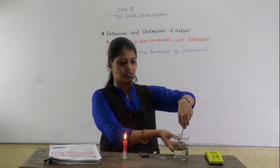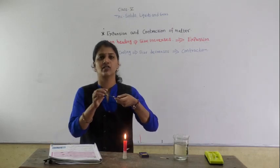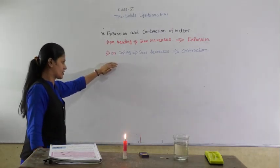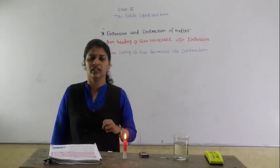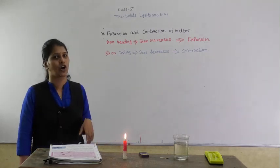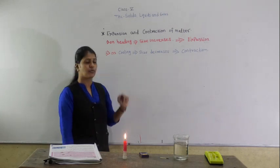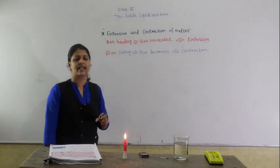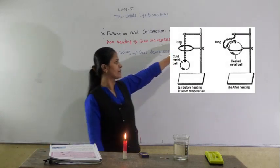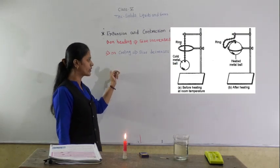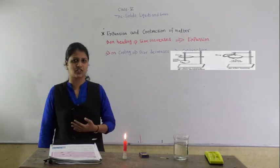Now once I cool this ring, we will see after cooling whether the ball is going back. The ball is not going. Because after contraction or cooling, the size decreases again. That process is called contraction of the matter. On heating, the size of the solid substance gets increased — that process is called expansion. While on cooling, the size of the solid substance gets decreased — that process is called contraction.